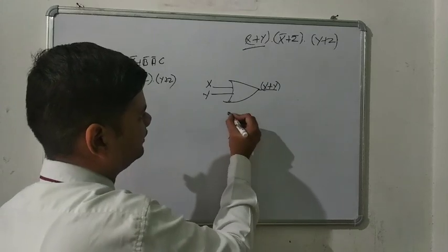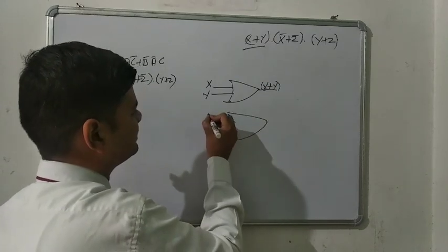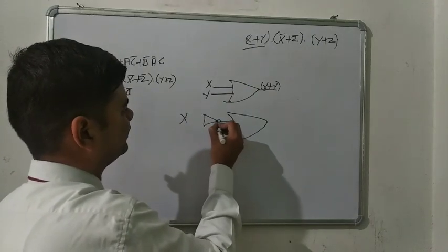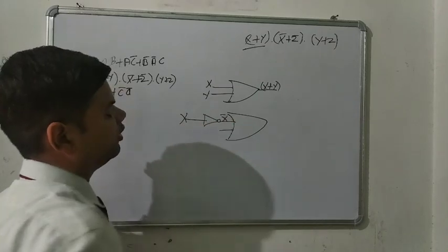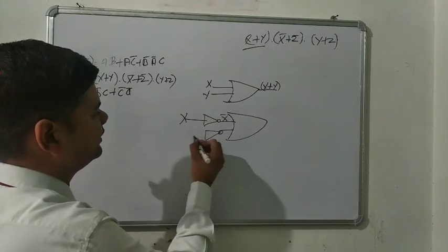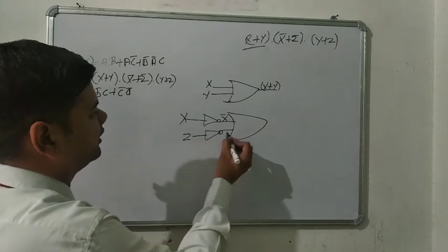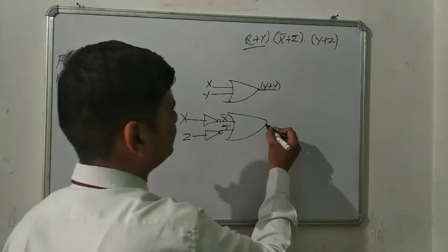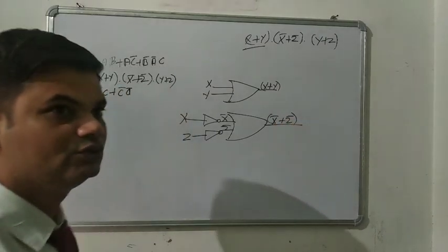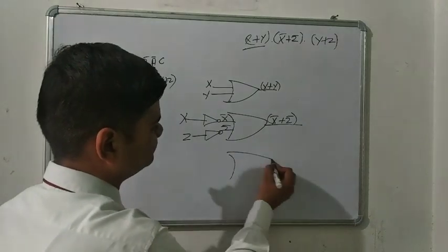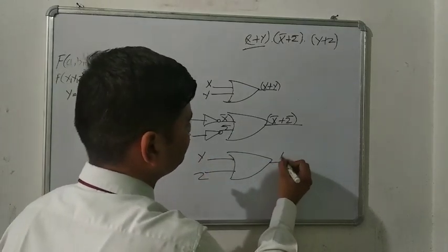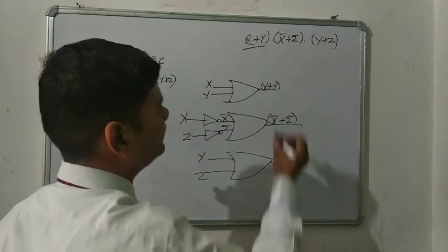Then again we have to draw another OR gate with two variables. First we enter X, then we use the NOT operator which converts X into X̄. Then we use another OR gate and enter the value of Z, converting it to Z̄. Finally the OR gate gives the output X̄ plus Z̄. Now the third term — again we use an OR gate, taking two variables Y and Z. The output is Y plus Z.